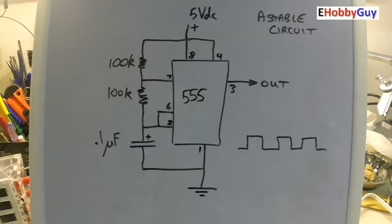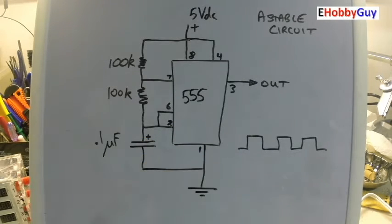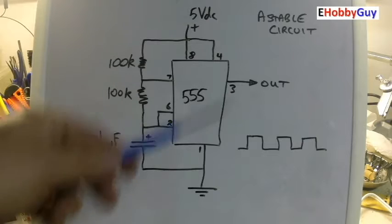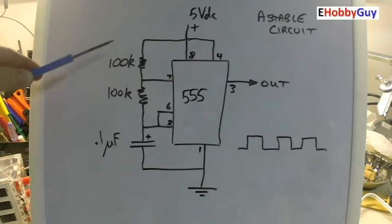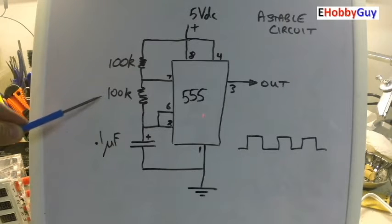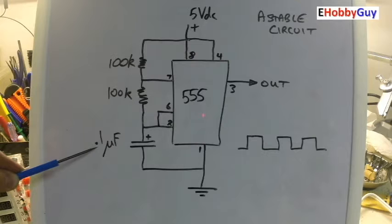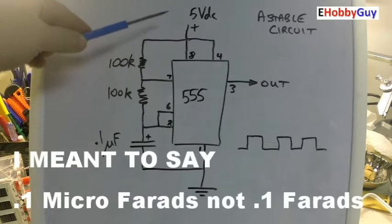First we'll look at this circuit which will create the square wave input to the 4017 chip. It's a very simple circuit using the 555 timer. There's only three components: two 100k ohm resistors and a 1.1 microfarad capacitor.